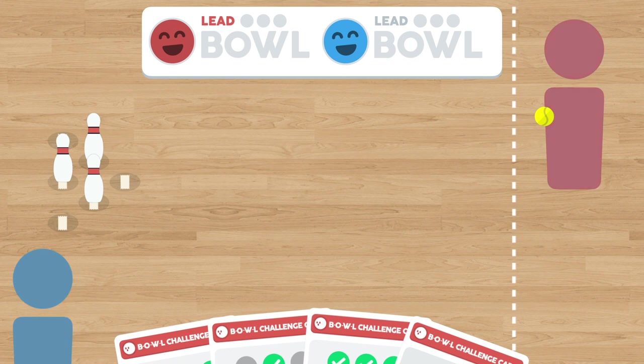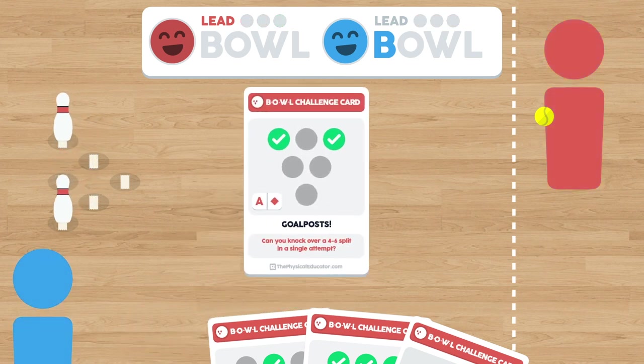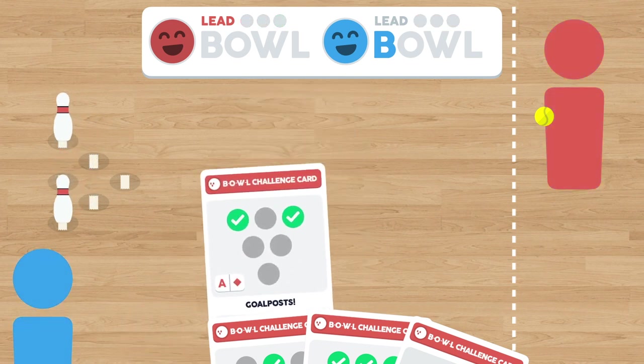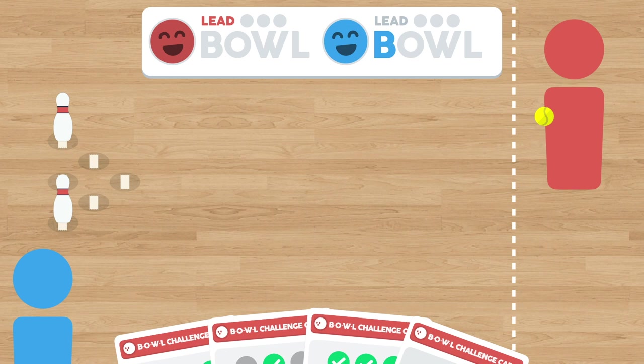if the opponent does not knock over the pins in their three attempts, that player earns a letter, in this case a B. It's still the lead bowler's turn to pick the next card and keep bowling in the next round.